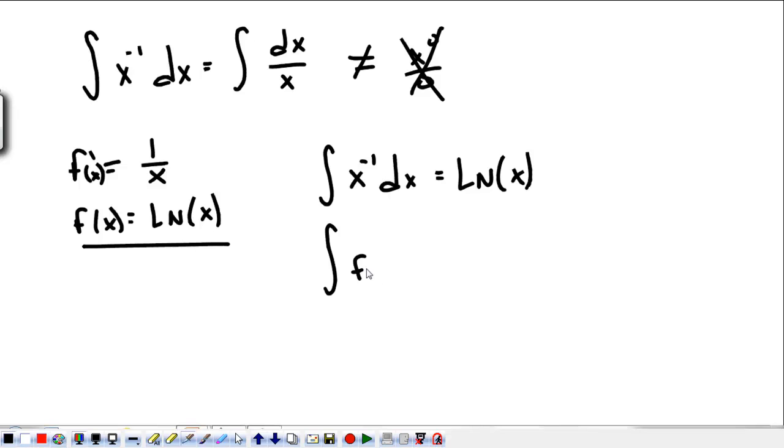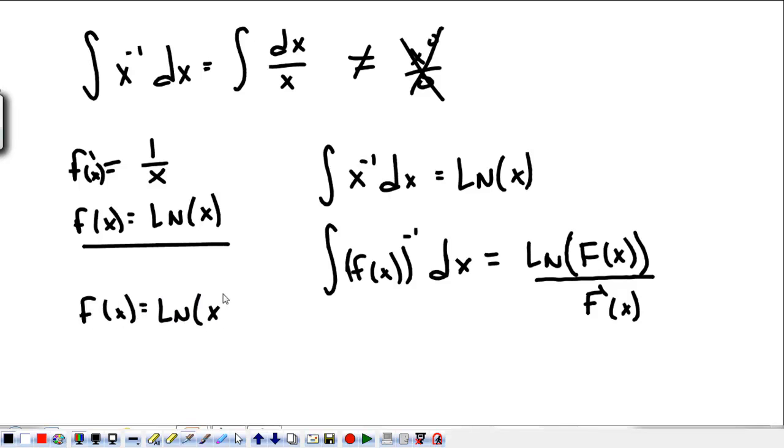Now, let's say we have f of x, and that whole thing is to the negative 1 dx. Well, it works the same way. We have the natural log of f of x. And what we're going to do is divide by whatever f prime of x is. Just like, if you had f of x is equal to the natural log of x squared, you would say that f prime of x is equal to 1 over x squared times 2x. We will work this out. Here's the reason we're talking about it.